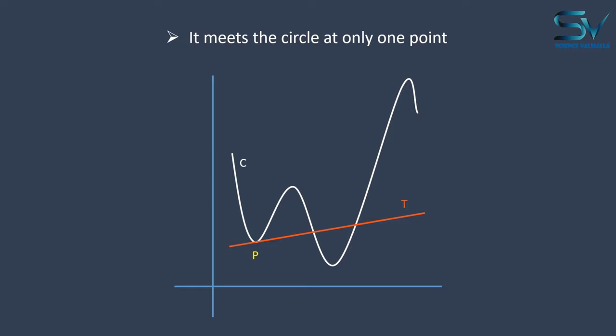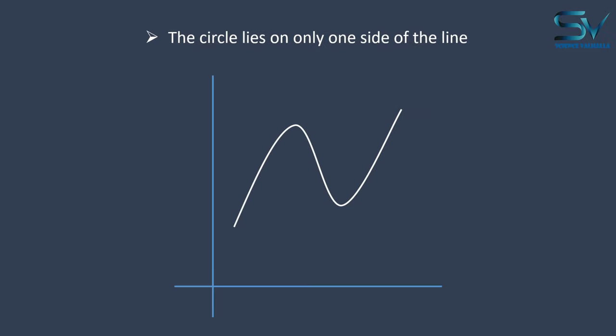Let's also look at the second property, which is that the circle will be on one side of the tangent line. At point P, we drew a tangent. Look at this curve carefully. And we discovered that it is on both sides of this tangent line. As a result, this property is also inapplicable.